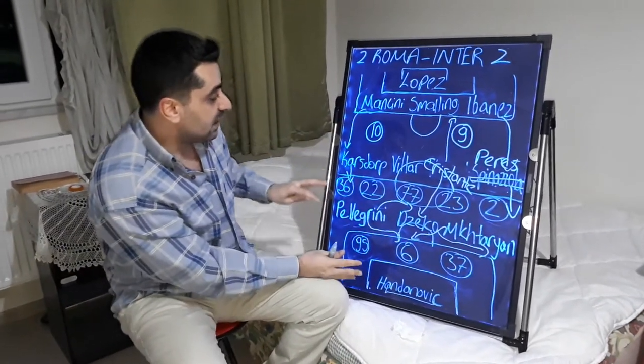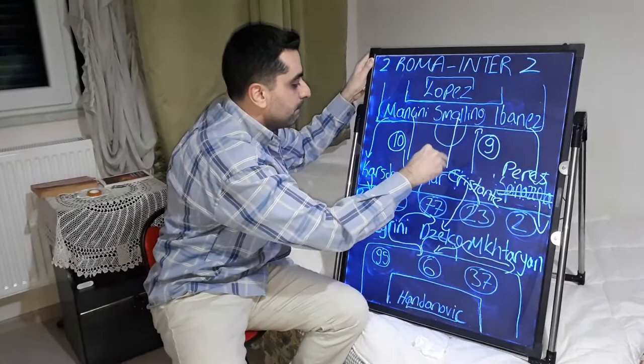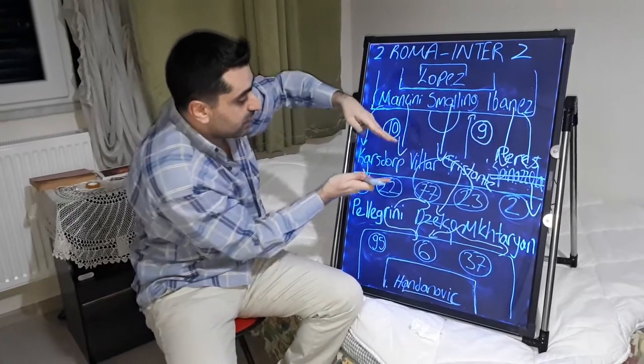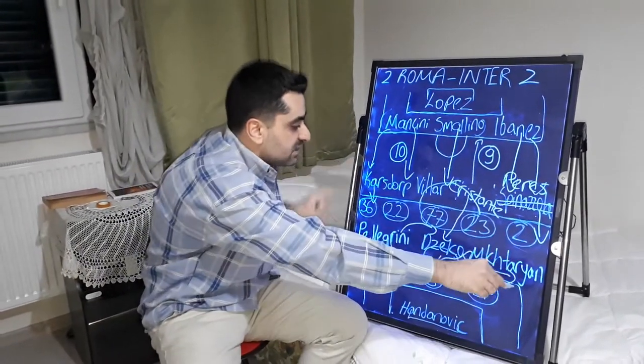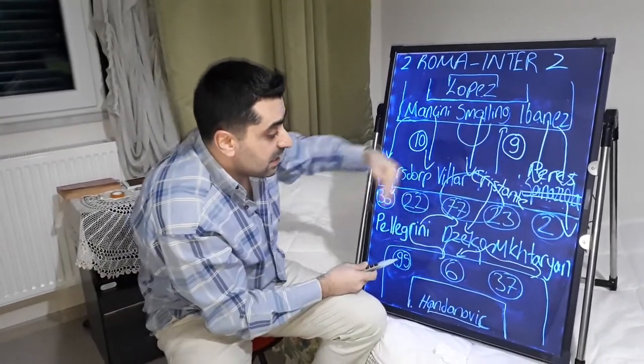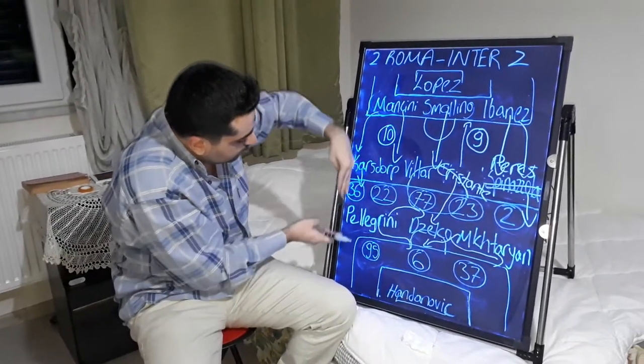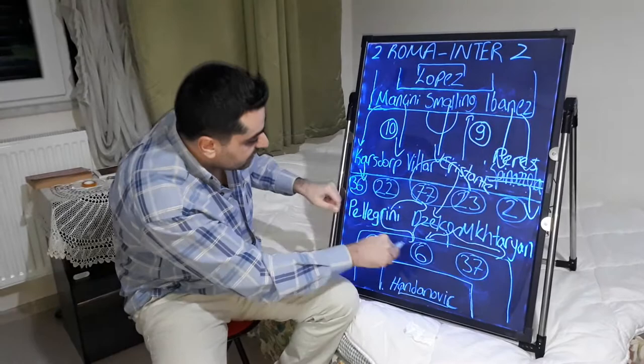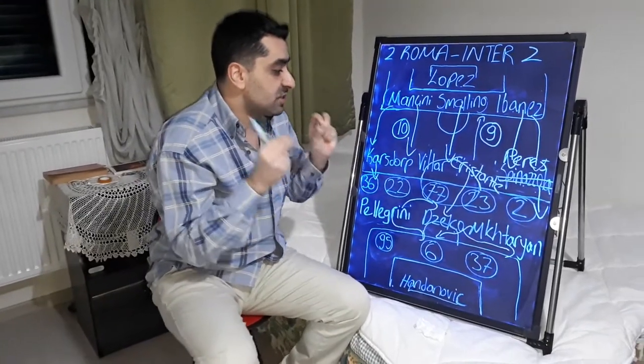They made pressure on Inter defence. At the same time, Mancini, Smalling and Ibáñez, these three came close to midfield together and Villar played close to these three. And Cristante, Pellegrini supported the attacks. And Karsdorp and Bruno Perez came from the wings and they together supported the attacks. And sometimes Mkhitaryan got into the box and sometimes Karsdorp came close to the right line. And Pellegrini came inside, came to middle and got into the penalty area. Pellegrini made good passes and the game was finished 2-2.